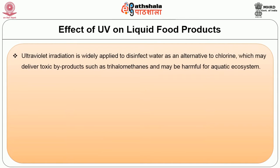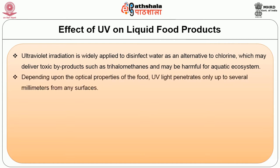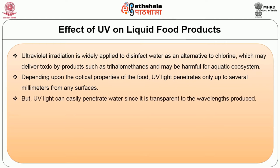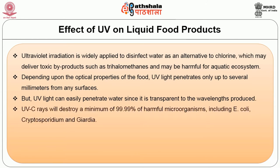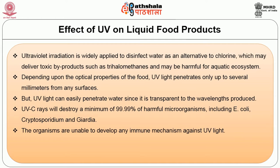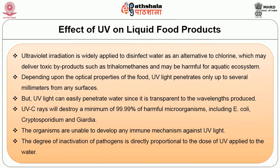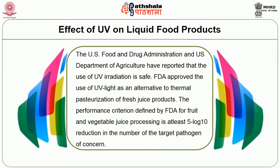Ultraviolet radiation is widely applied to disinfect water as an alternative to chlorine, which may deliver toxic byproducts such as trihalomethanes and may be harmful for aquatic ecosystems. Depending upon the optical properties of the food, UV light penetrates only up to a few millimeters from any surface. However, UV light can easily penetrate water since it is transparent to the wavelength produced. UVC rays will destroy a minimum of 99.99% of harmful microorganisms including E. coli, Cryptosporidium, and Giardia. The organisms are unable to develop any immune mechanism against UV light, and the degree of inactivation is directly proportional to the UV dose applied.